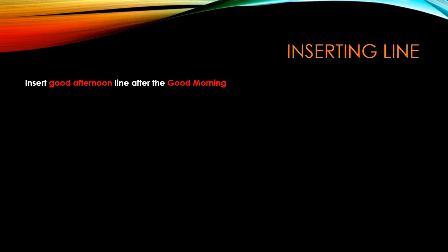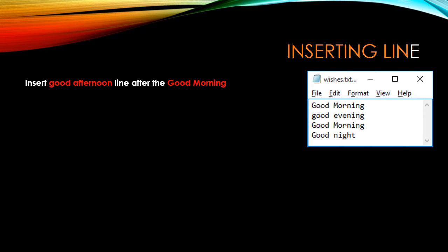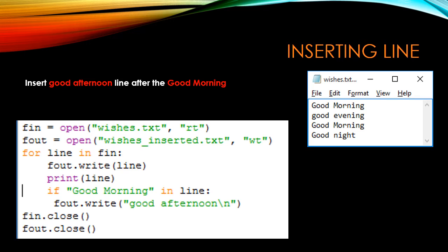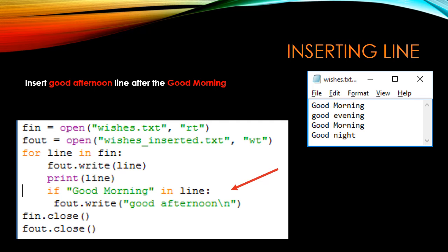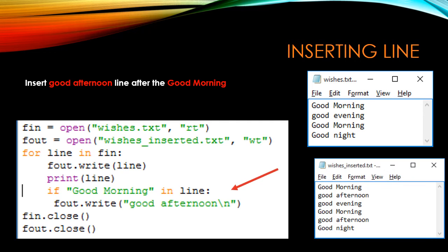Next, we are going to insert a line in between. Consider the file vistas.txt — after 'good morning' we are going to insert the sentence 'good afternoon'. There are two 'good morning' sentences here. We open vistas.txt in read mode and also in write mode, read line by line and write it back. We check if 'good morning' is present in a particular line — if so, we insert 'good afternoon\n' using the write function to go to the next line. Now, 'good afternoon' is inserted twice after each 'good morning'.